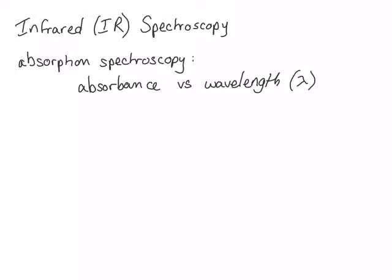Remember that wavelength and the energy of light are inversely proportional, and so the wavelength of light that is absorbed by a molecule can tell us something about its energy and therefore its structure. The electromagnetic spectrum is made up of many wavelengths of light.